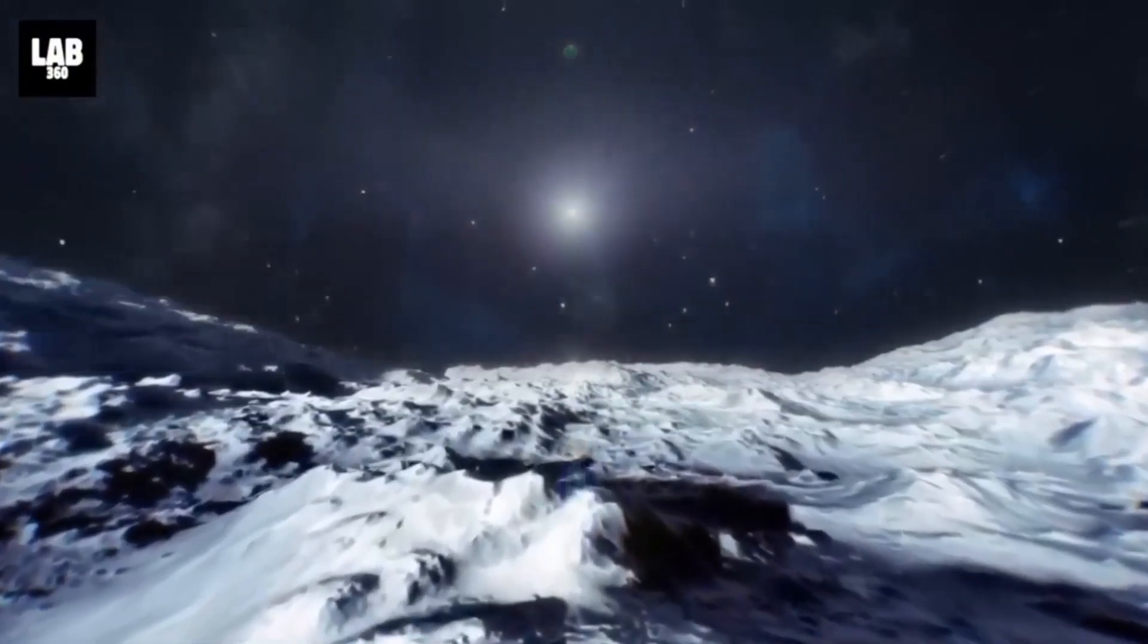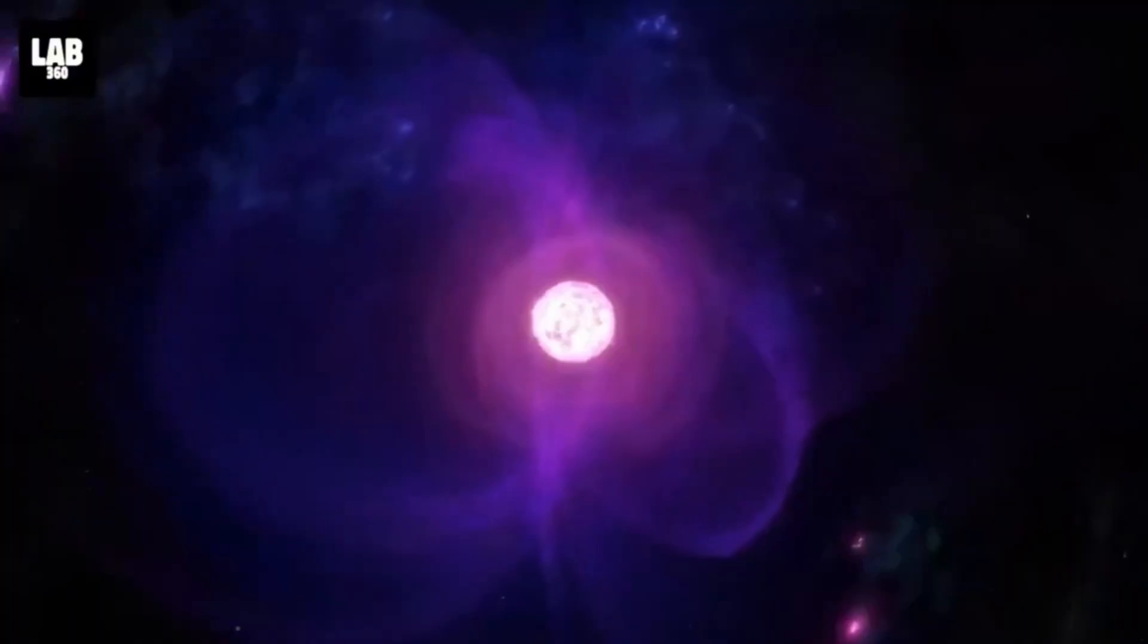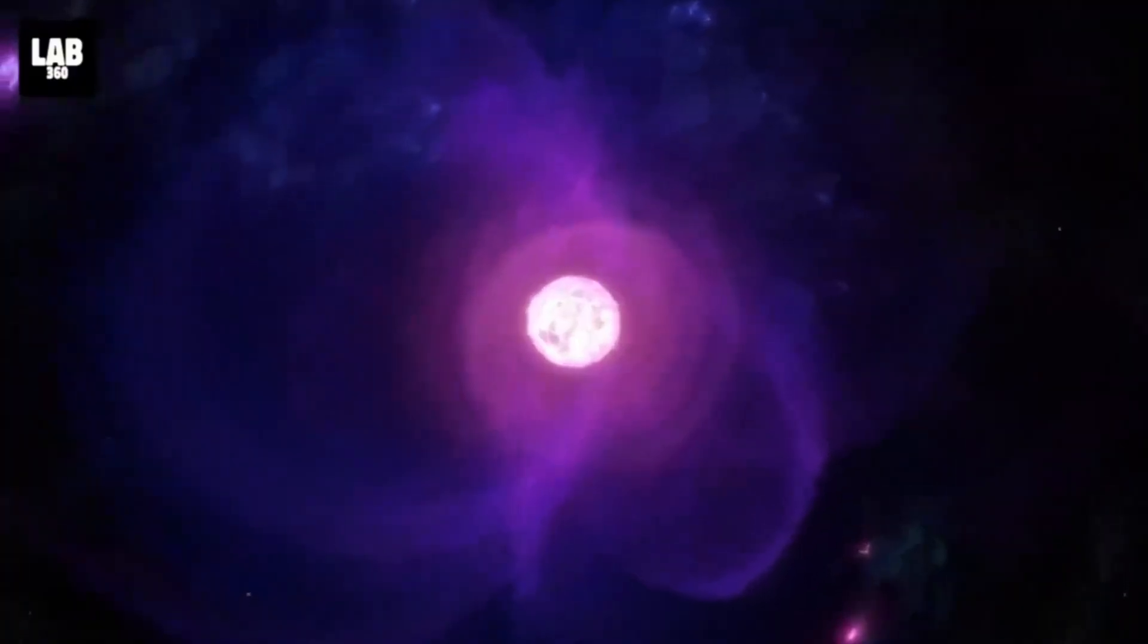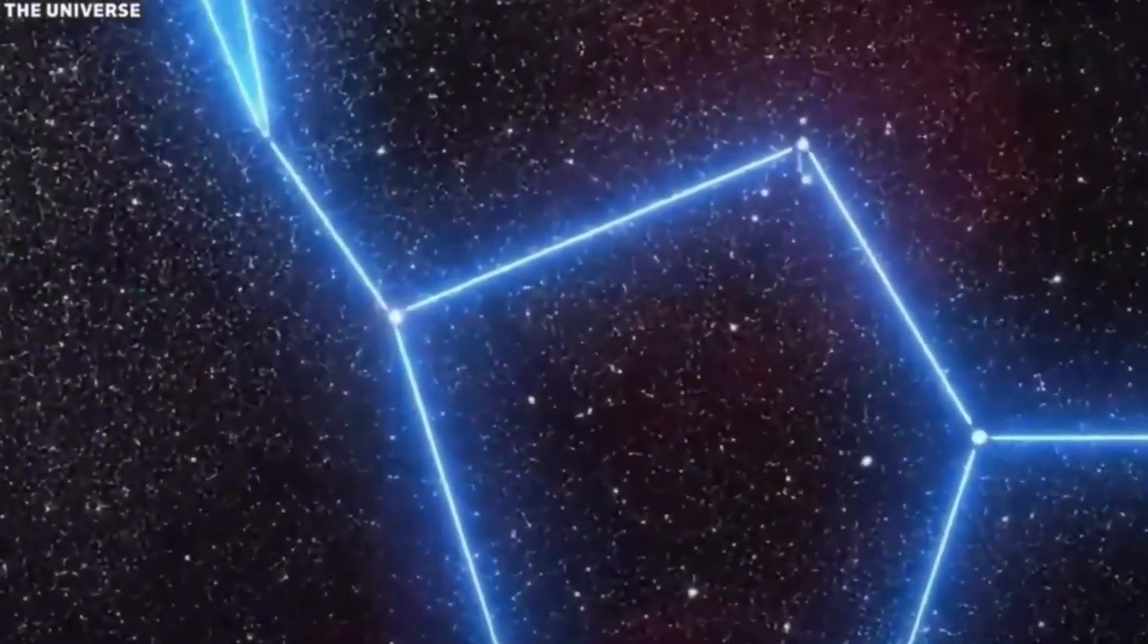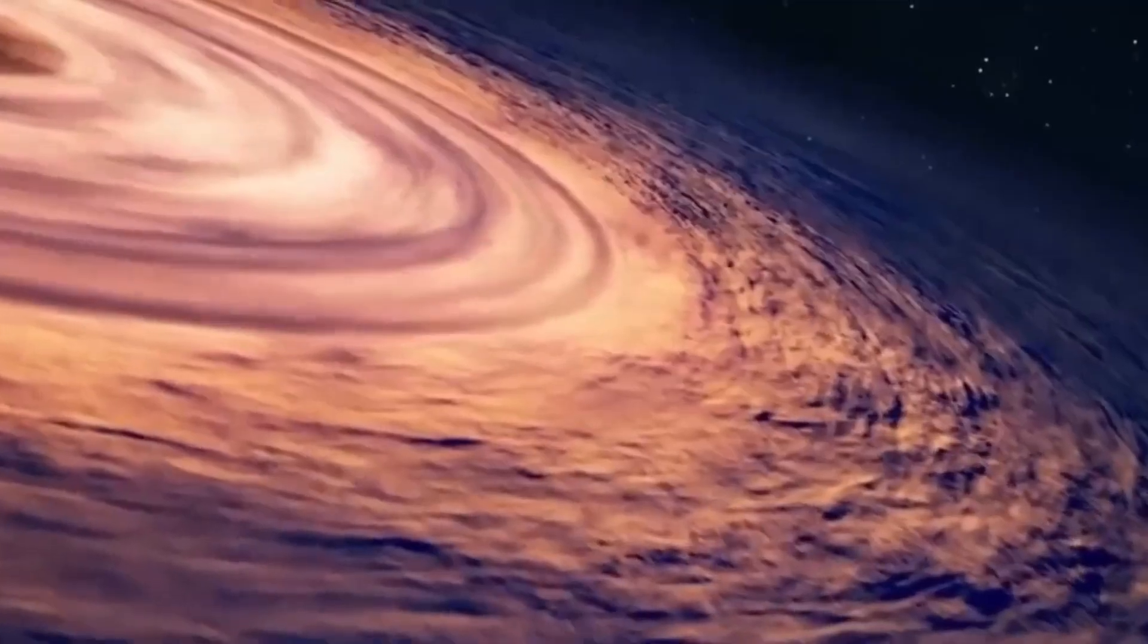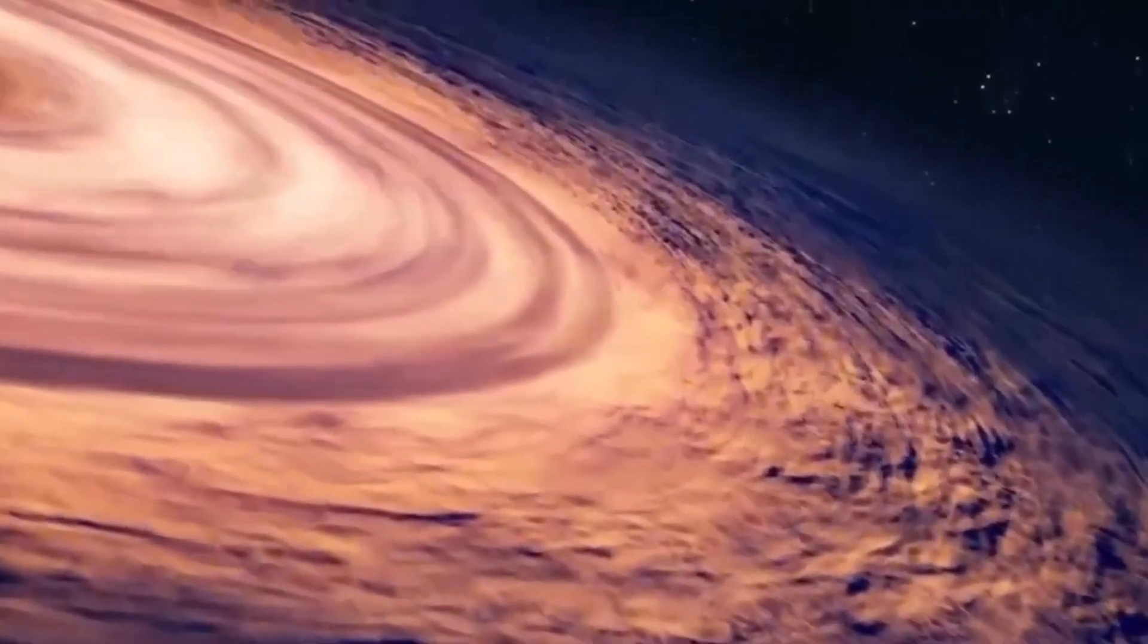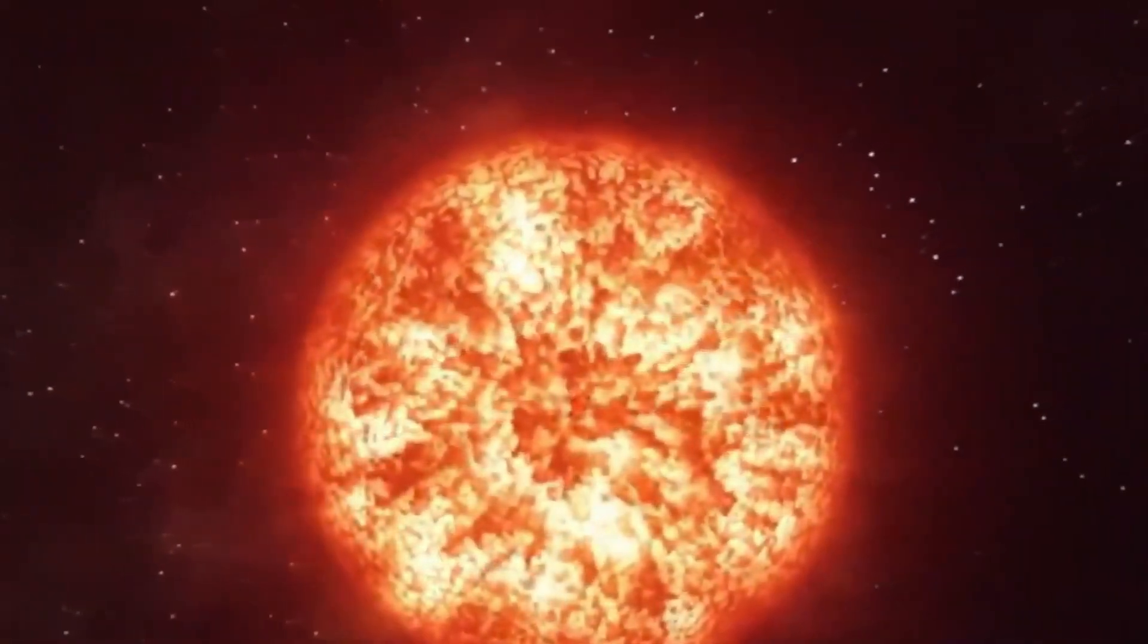This immense size is both a marvel and a liability, as it means Betelgeuse's core is burning through its fuel at a breakneck pace. When this fuel is exhausted, the core will collapse, triggering the cataclysmic explosion we know as a supernova.